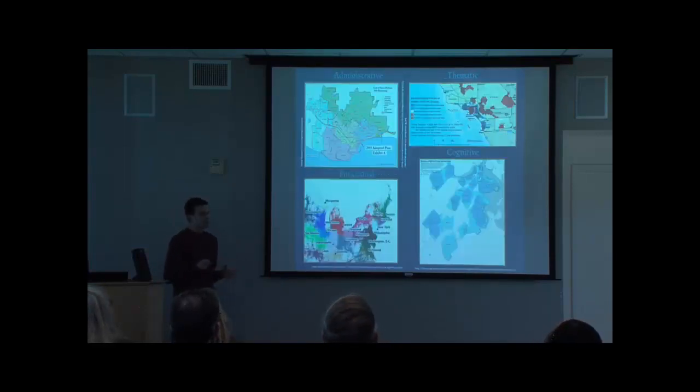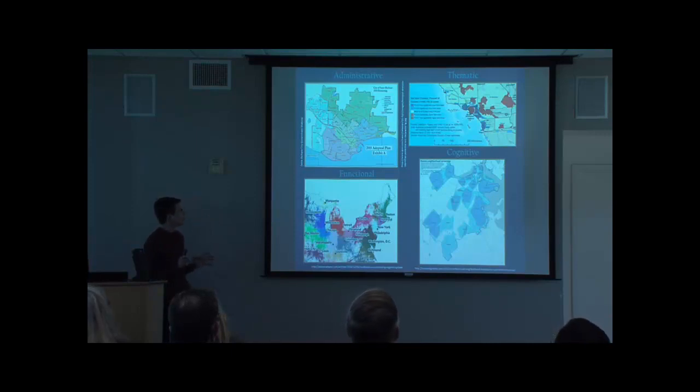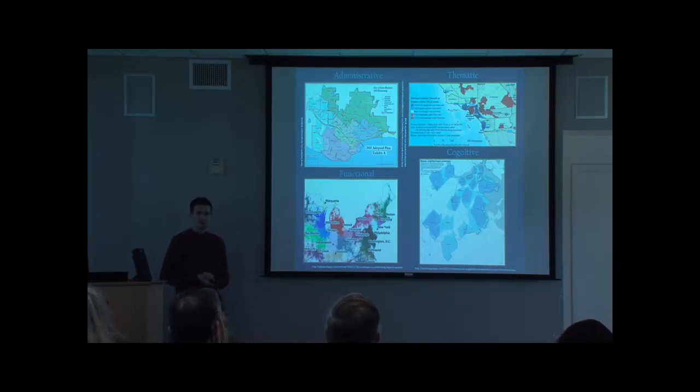So if we can say it is a region, what type of region is it? In geography, we think of there being four types of regions. Administrative regions are one, and electoral districts are the perfect example of this type. But we also have thematic regions, which are based on a certain measurable variable, like income.